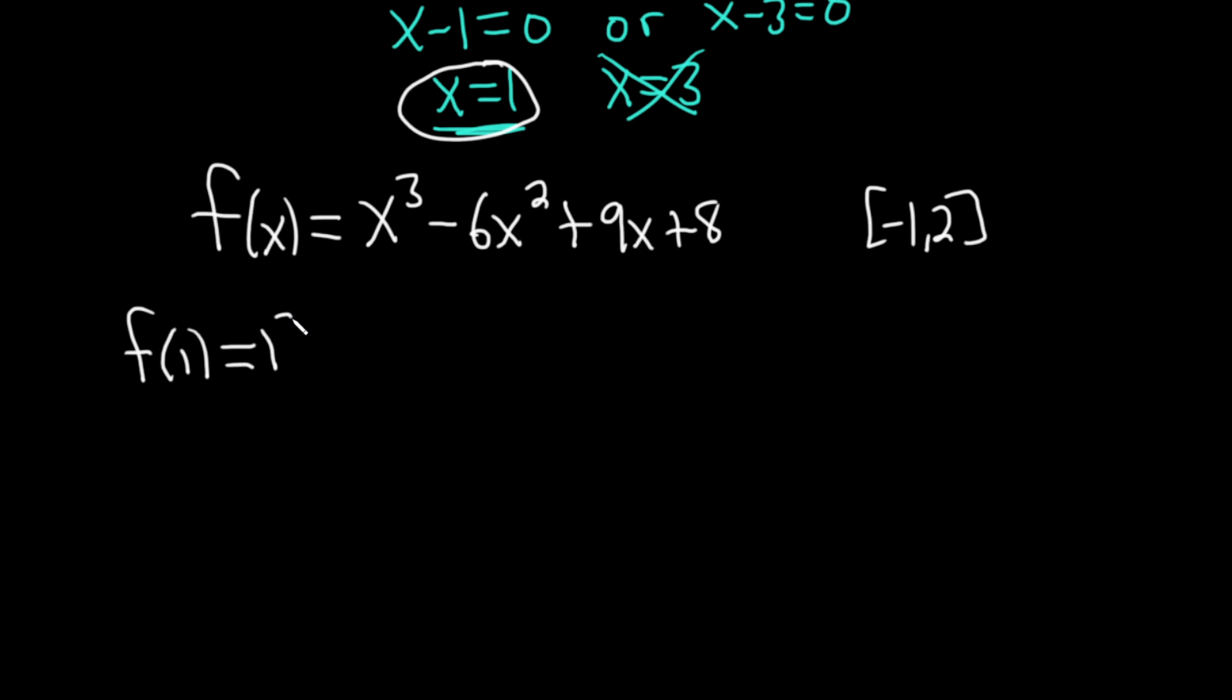f(1) = 1³ - 6(1)² + 9(1) + 8 = 1 - 6 + 9 + 8. This is 1 - 6 plus, then 9 + 8 is 17. So this gives us, let's see, -5 + 17 = 12.